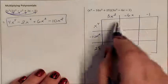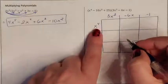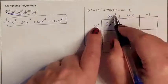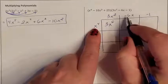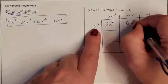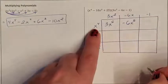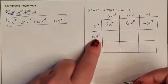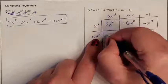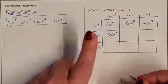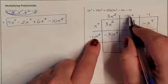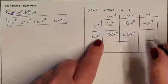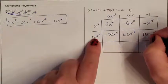Now that we have our sides arranged, we do the area model by multiplying. x to the fourth times 3x squared is 3x to the sixth, because you add the exponents. x to the fourth times negative 6x is negative 6x to the fifth. x to the fourth times negative 1 is negative x to the fourth. Negative 10x squared times 3x squared is negative 30x to the fourth. Negative 10x squared times negative 6x is positive 60x to the third. Negative 10x squared times negative 1 is positive 10x squared.